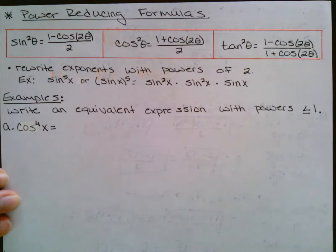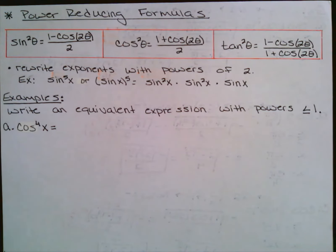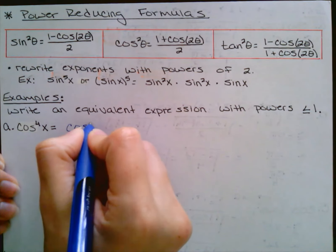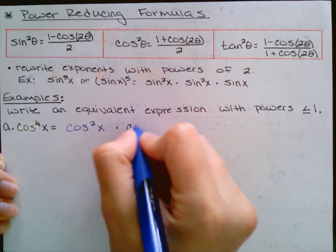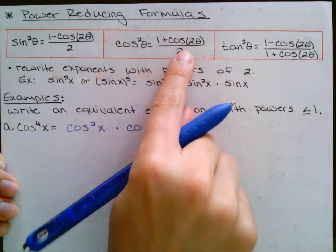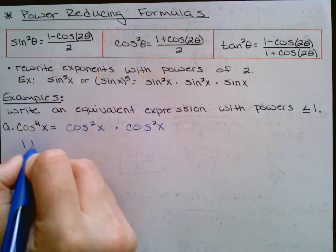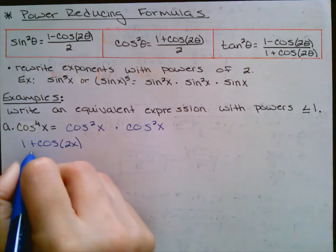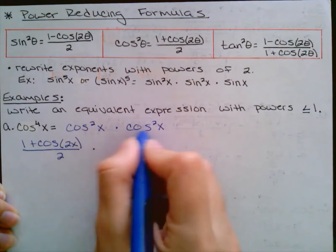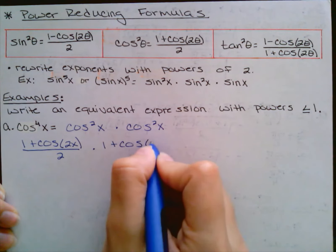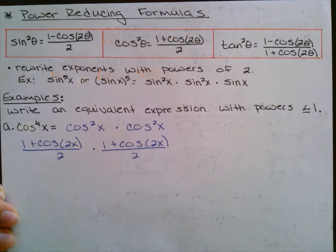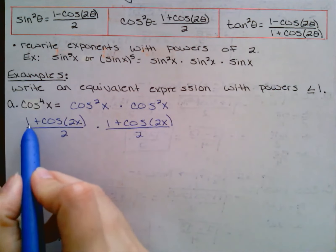Let's check out this first example: cosine to the fourth power. I'm going to write this as cosine squared of x times cosine squared of x. So now I have two of these. It's going to become one plus cosine of two x, all over two, times the same exact thing: one plus cosine of two x, all over two.